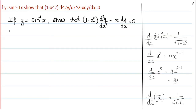The question is: if y equals sin inverse of x, show that 1 minus x squared times d squared y by dx squared minus x times dy by dx equals 0. So let us write what is given: y equals sin inverse of x.